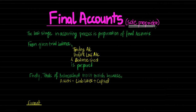A Sole Proprietor is a person who carries on business without being a firm, without entering into partnership with anyone — so all by alone. The last stage in the accounting process is preparation of Final Accounts. We have learnt the procedure till Trial Balance; now it is the final step in Accounts, and that is why it is known as Final Accounts.